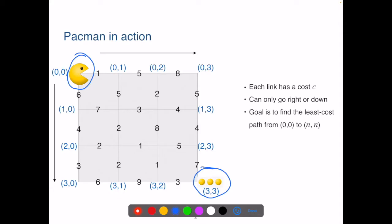Pac-Man can only move along links and can only move down or move right. Each link has an associated cost. Our goal is to find the least cost path from location (0,0) to location (n,n).